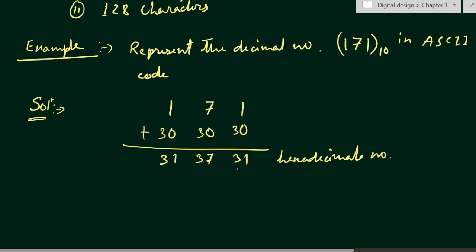Now we will convert this hexadecimal number into binary. Each hexadecimal number will be converted into a 7-bit binary code. The least significant 4 bits will be the least significant nibble of the hexadecimal code. So this 1 will be represented with 4 binary digits and this 3 will be represented by 3 binary digits. Similarly, this 7 will be represented by 4 binary digits and this 3 will be represented by 3 binary digits.